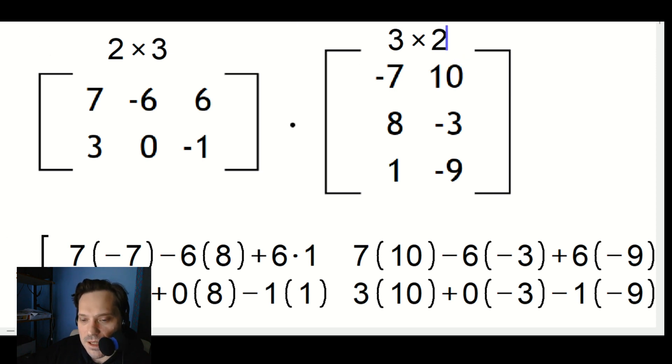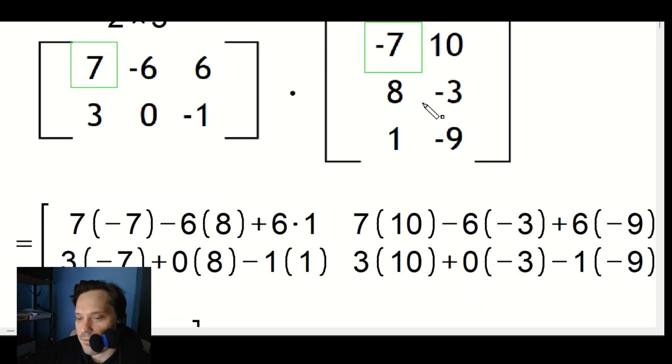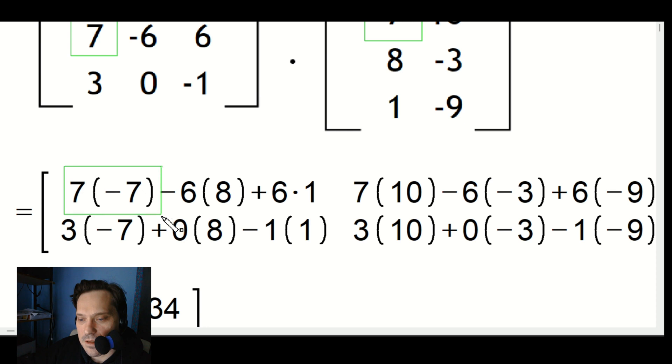Now let's multiply these out. You form the dot product. Take the 7 and multiply by the -7, that's going to go in this position right here. Then take the -6 multiply by the 8, -6 by the 8.